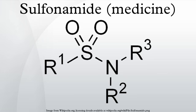Function: antimicrobial. In bacteria, antibacterial sulfonamides act as competitive inhibitors of the enzyme dihydropteroate synthetase, an enzyme involved in folate synthesis. Sulfonamides are therefore bacteriostatic and inhibit growth and multiplication of bacteria, but do not kill them. Humans, in contrast to bacteria, acquire folate through the diet.